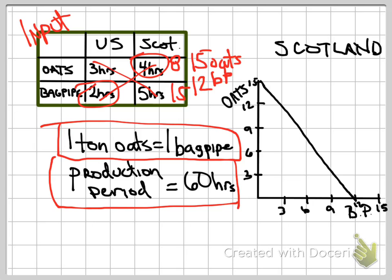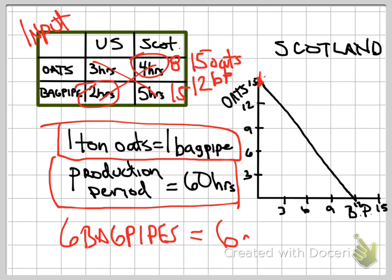However, we know that there's going to be trade, and Scotland is going to be specializing in oats. Assuming those terms of trade, Scotland will be producing at a point of 15-0. We also know from the problem that Scotland would like to have six bagpipes as a result of the trading relationship. Given that it's one-to-one, we know that they're going to give up six tons of oats in order to accomplish that.